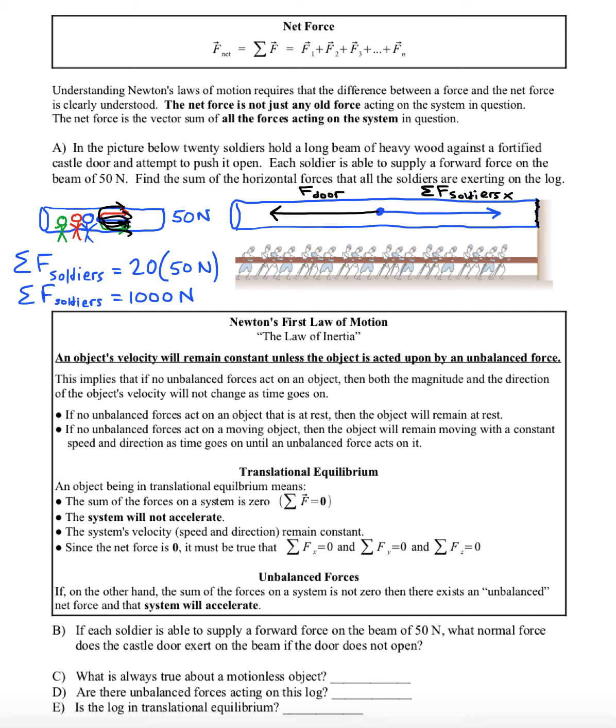That'll be the force of the door. So as we can see, the reason why the beam doesn't crash through the door is because the door is able to supply a normal force in order to balance with the forward force that the soldiers are pushing with. Now there would be other forces involved which don't really play a part in whether the beam crashes through the door or not.